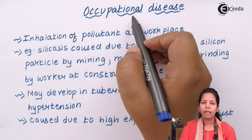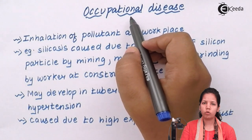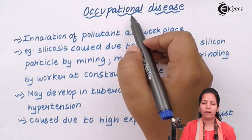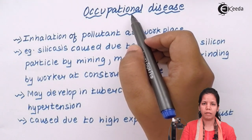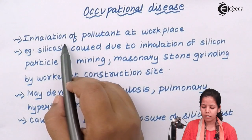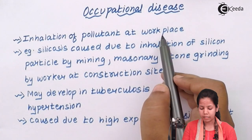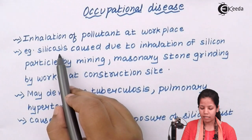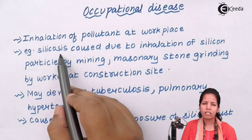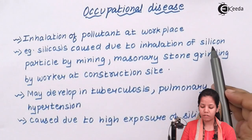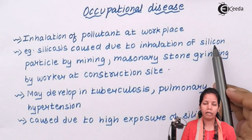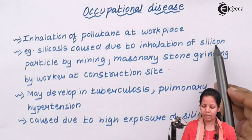Occupational diseases can also be termed as occupational lung diseases, which one gets due to working at certain places in certain conditions. Inhalation of pollutants at the workplace can cause an occupational disease termed as silicosis. Silicosis is caused by the inhalation of silicon particles, especially during working at construction sites, building workplaces, offices, and buildings — basically among masons.